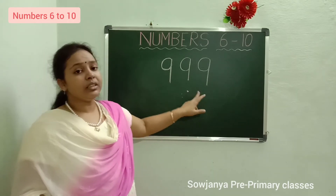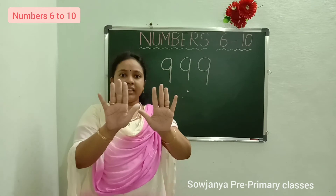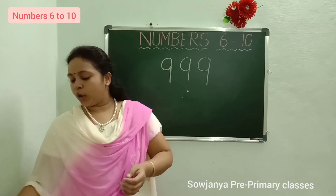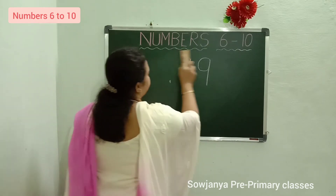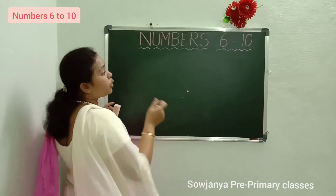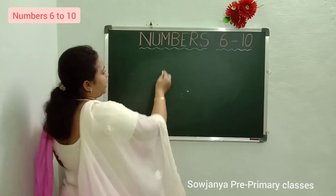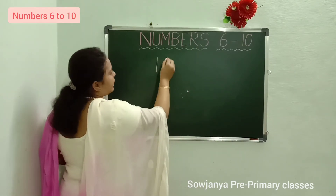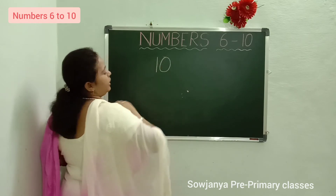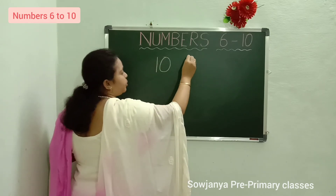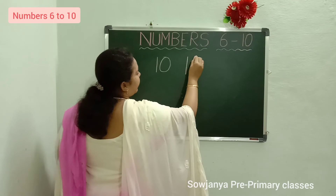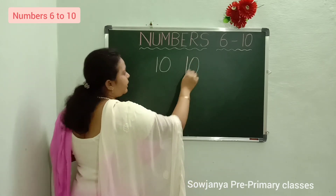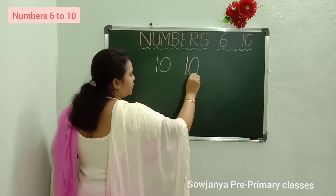9 after? 10. I will show you how to write 10. We have 2 digits for 10, that is 1 and 0. How to write this? You have to put a standing line and a circle. 10. Standing line and a circle. 10.